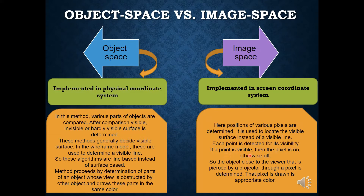In image space, each point is detected for its visibility. If a point is visible, then the pixel is on. If a point is invisible, then the pixel is off. The object closest to the viewer that is pierced by a projector through a pixel is determined, and that pixel is drawn in an appropriate color.